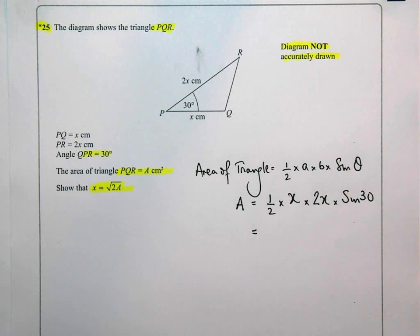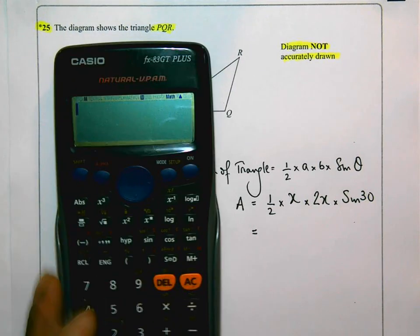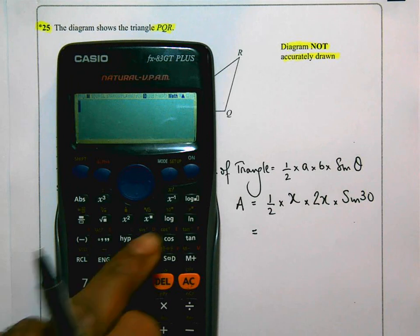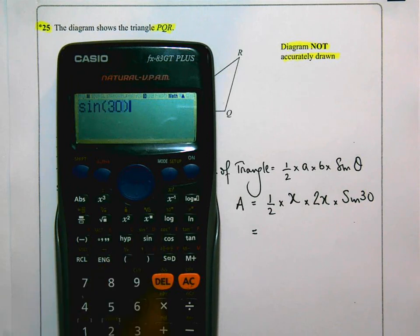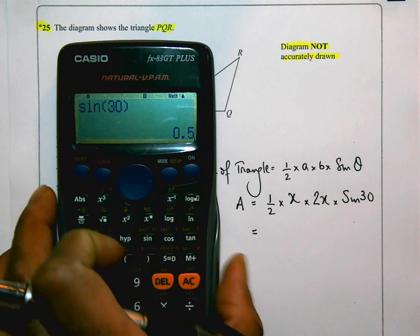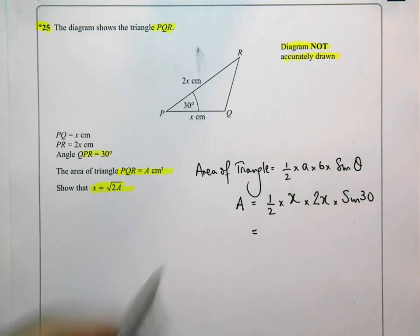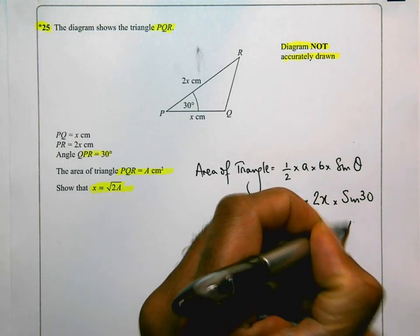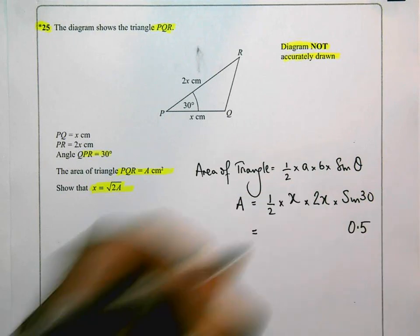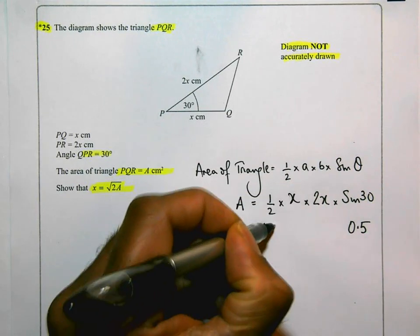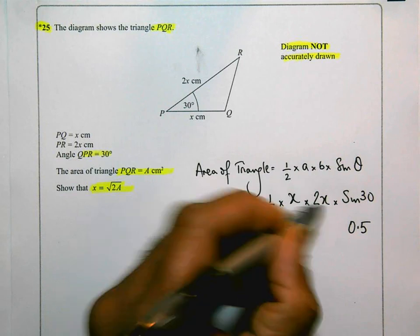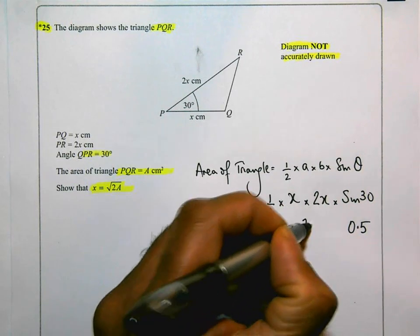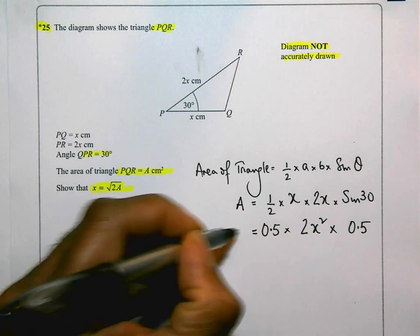Now I'm a bit familiar with this because I think I know what sine of 30 is. I'm going to check it on my calculator. Sine of 30 degrees is 0.5. Okay. So I'm going to replace that with 0.5. I know a half is 0.5. And X times 2X is 2X squared. And that's equal to A.